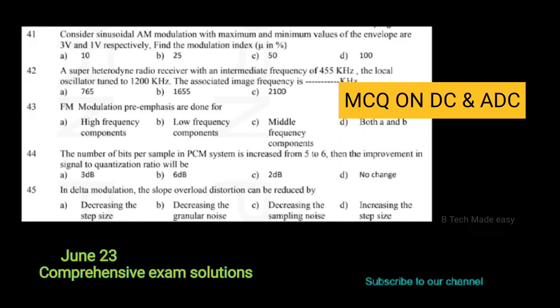Consider sinusoidal AM modulation with the maximum and minimum values of an AM signal being 3V and 1V respectively. Find the modulation index mu.